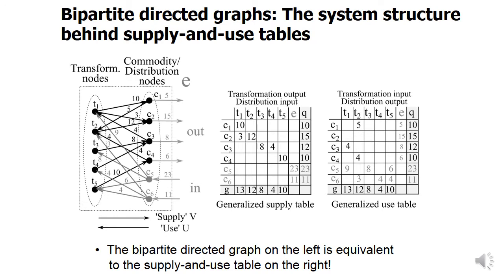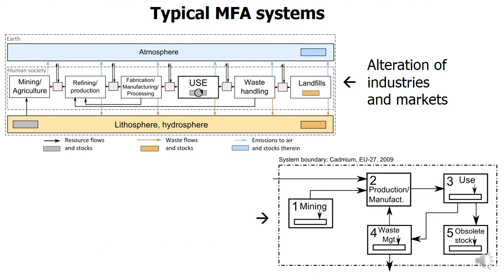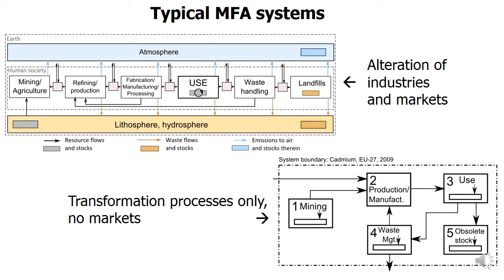This was quite abstract, so we now look at how the different modeling fields — MFA and so on — use the two types of system drawings. In MFA we usually use only directed graphs: different processes linked within the system boundaries. MFA does have a notion of markets between transformation processes, but there is no database structure that enforces a bipartite structure. For example, there is a flow from waste handling to the refining sector — from one industry to another — which is a violation of the bipartite principle. So in MFA, the general system structure is not bipartite.